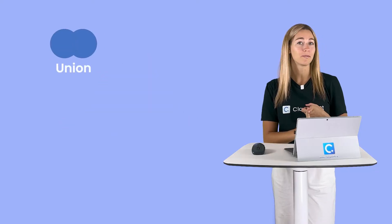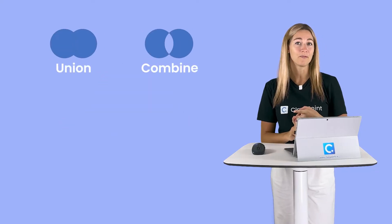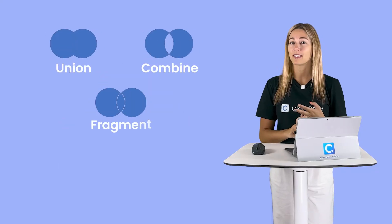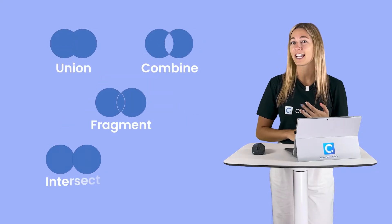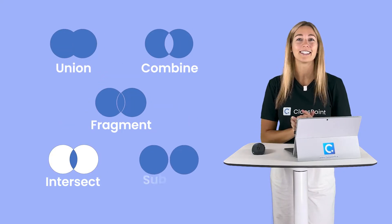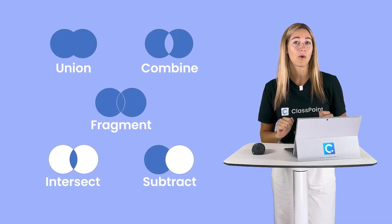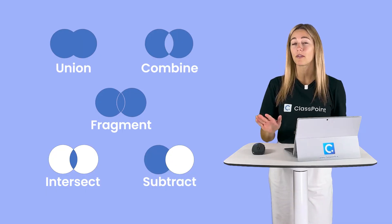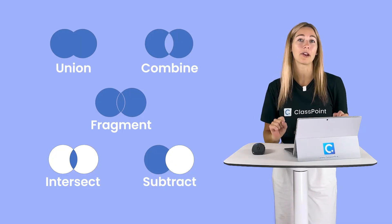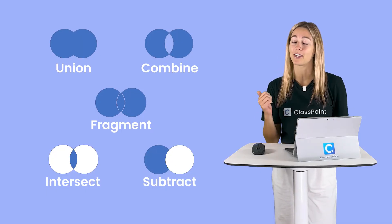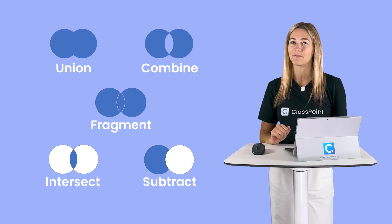There are five different ways to merge shapes, text, and images inside PowerPoint: union, combine, fragment, intersect, and subtract. Today I'm going to walk you through each one of those and how to implement it into your next presentation.